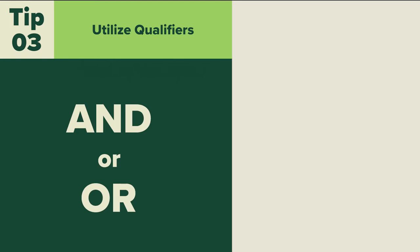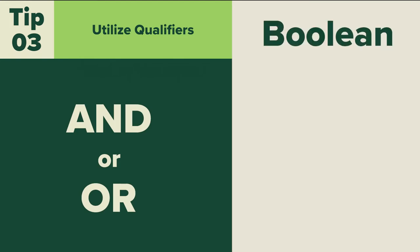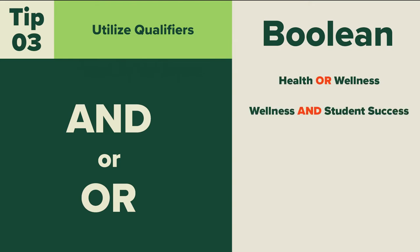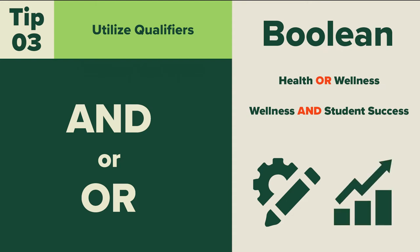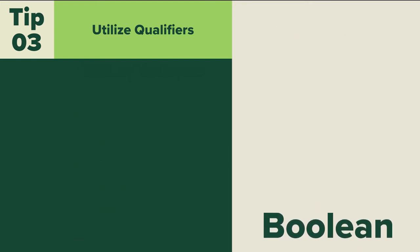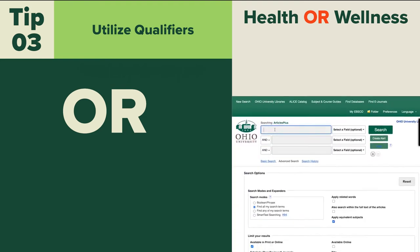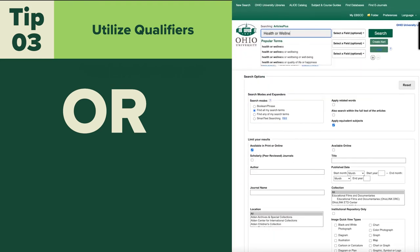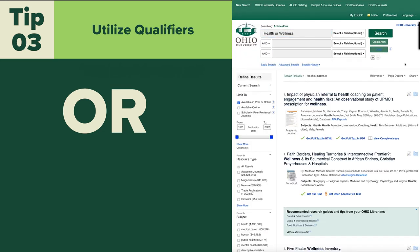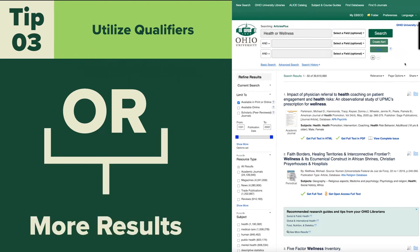The words AND or OR, sometimes called Boolean, can be used to group sets of search terms together in a meaningful way, which will customize the results to suit your specific needs. Use OR to group together synonyms while typing your topic into a database or search engine. For example, 'health OR wellness.' This allows the database to include both terms and will increase the number of results.